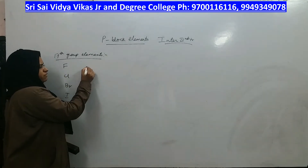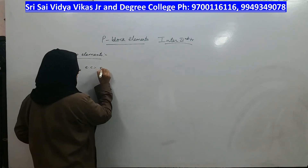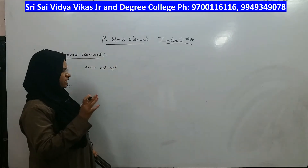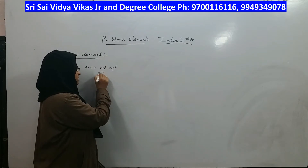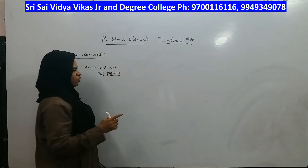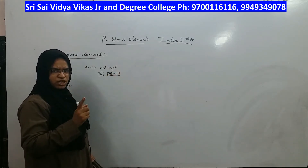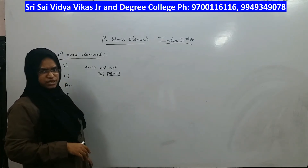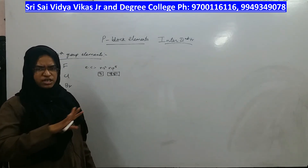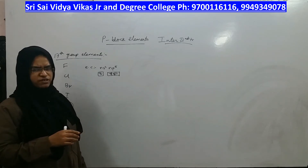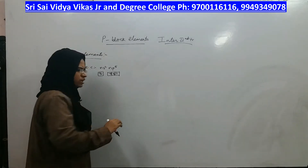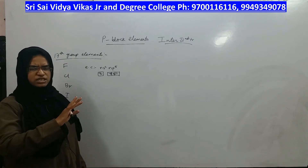The electronic configuration of these elements is ns² np⁵. Out of 8 electrons, they have 7 in their valence shell, meaning they have a shortage of only 1 electron to achieve the noble gas electronic configuration. If they gain 1 electron, their octet is satisfied and their configuration matches the nearest noble gas, which follows right after this group.